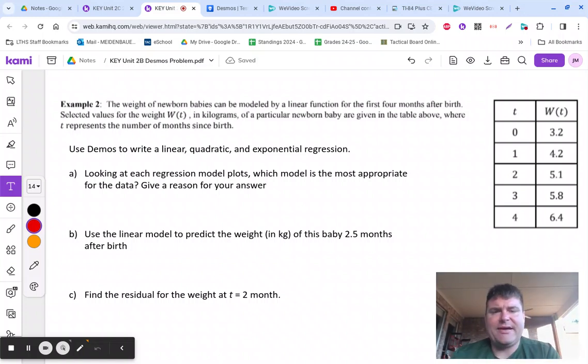The weight of a newborn baby is being modeled by a linear function for the first four months after birth. Selected values of W(T) in kilograms of a particular newborn baby are given in the table, where T represents the number of months since birth. Use Desmos to write a linear, quadratic, and exponential regression. So all we're going to do here is use this table and go over the regressions.